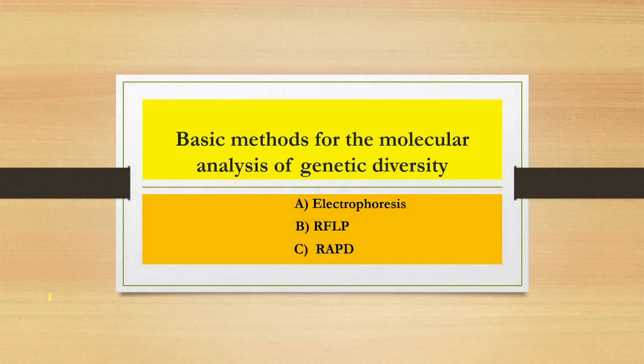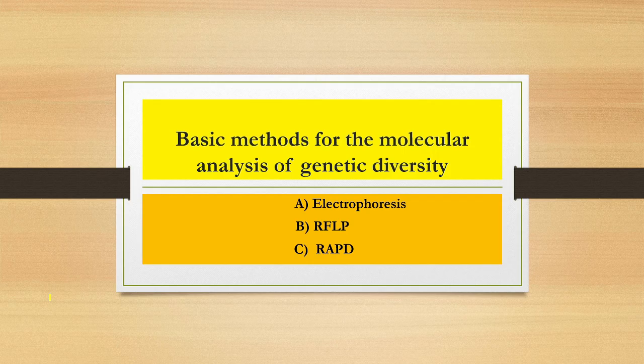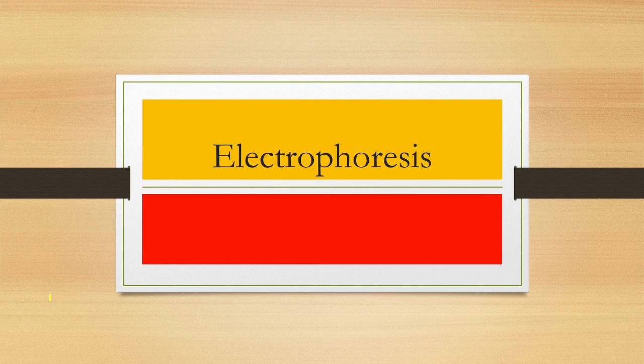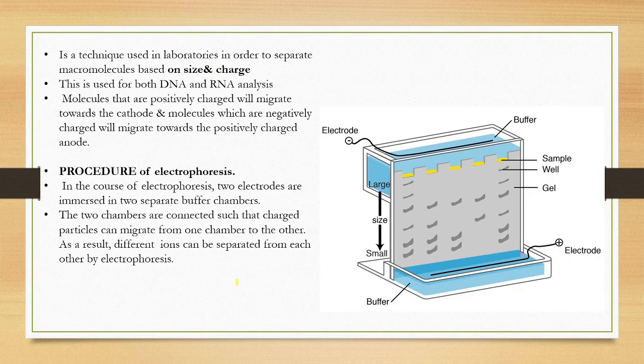Basic methods for the molecular analysis of genetic diversity include three techniques: electrophoresis, RFLP, and RAPD. These are the three methods used for the analysis of genetic diversity.